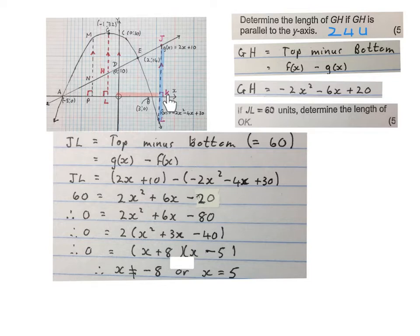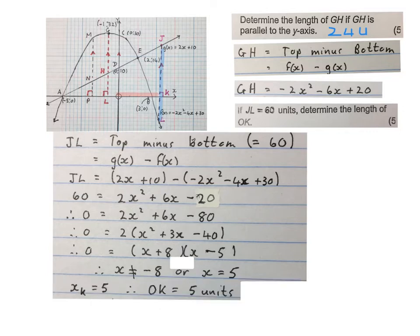Now we look at the line again and we see it's here on the positive side of the x-axis. So it can't be x = -8, it's not on this side. Like I said, x at k will be 5. So the length of OK, that red line, will be 5 units. Please stop the video and get your brain around this.